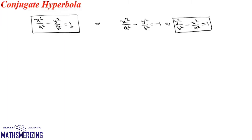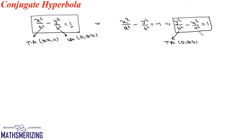For the hyperbola x² / a² - y² / b² = 1, the equation of the conjugate hyperbola is y² / b² - x² / a² = 1. For the first hyperbola, the transverse axis is (±a, 0) and the conjugate axis is (0, ±b). For the conjugate hyperbola, the transverse axis is (0, ±b) and the conjugate axis is (±a, 0). So the transverse axis of one is the conjugate axis of the other — that is why they are called conjugate hyperbolas.